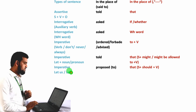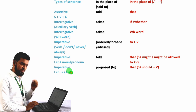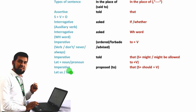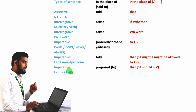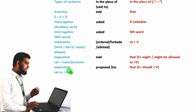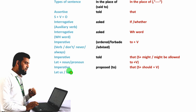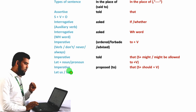Assertive sentence: we know that this sentence starts especially with subject and verb. In place of the reporting verb, we have to use 'told', and in place of the inverted comma, we use 'that'. For an interrogative sentence that starts with an auxiliary verb, we have to place 'asked', and in place of the inverted comma, we use 'if', 'ought to', or 'whether'.